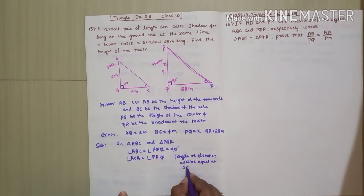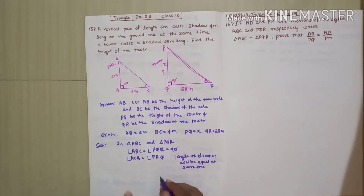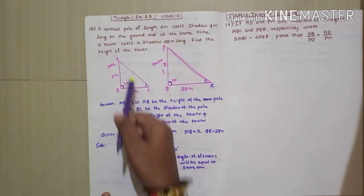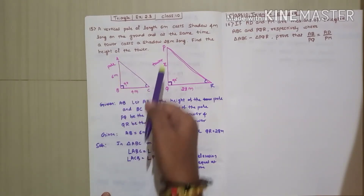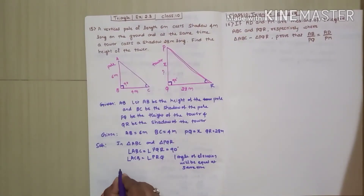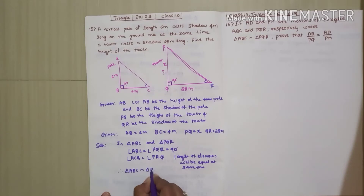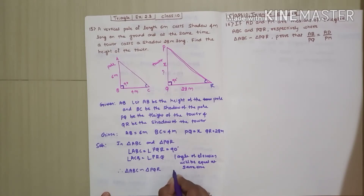Two angles of triangle ABC are equal to two angles of triangle PQR, so we can say triangle ABC is similar to triangle PQR by the AA criteria.